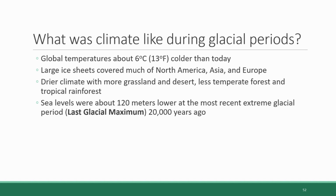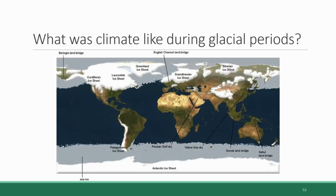Sea level varies at each glacial period, but during the most recent extreme glacial period, which was 20,000 years ago and is referred to as the last glacial maximum or the LGM, sea levels were about 120 meters lower than they are today, which is about 360 feet. Consequently, more land was exposed, so there were land bridges connecting the northeastern part of the Asian continent and the northwestern part of North America, connecting England to continental Europe, connecting Australia to Papua New Guinea, and connecting various island nations in Southeast Asia with the main land mass of Asia.